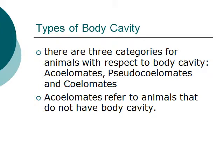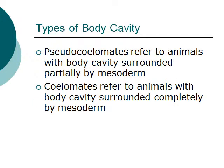There are three categories for animals with respect to body cavity. They are the acoelomates, the pseudocoelomates, and the coelomates. Acoelomates refer to animals that do not have a body cavity. Pseudocoelomates refer to animals with a body cavity surrounded partially by mesoderm, whereas coelomates refer to animals with a body cavity surrounded completely by mesoderm.